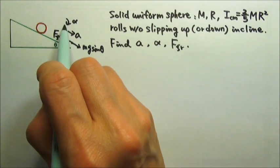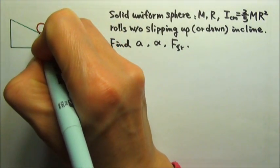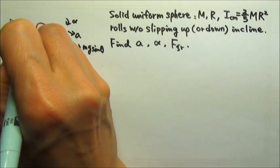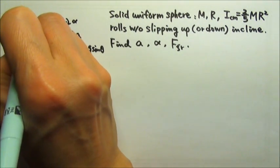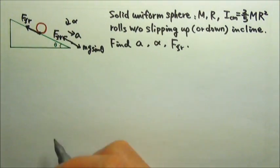And which force gives us the torque? It would be the friction, because the friction acts at the contact point.